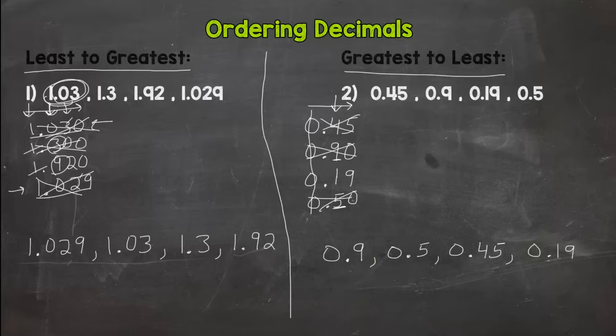So that pretty much sums it up for ordering decimals - you line up your decimals, compare left to right, and see if you're doing least to greatest or greatest to least and put them in that order. Okay, so hopefully you're ready to try some on your own or maybe with a little guidance depending on how you want to do it.